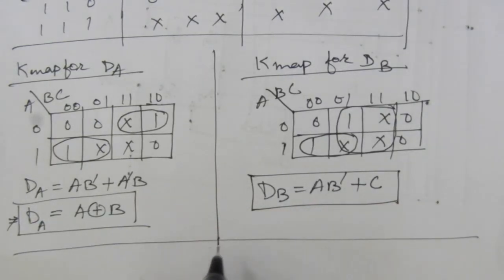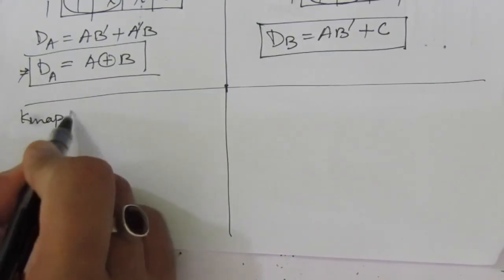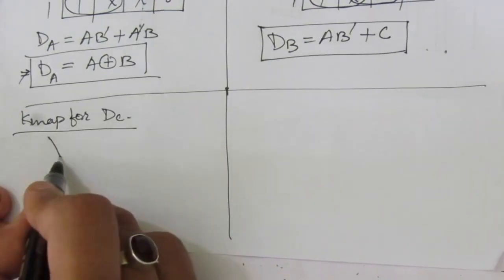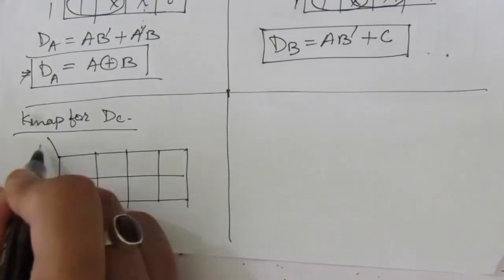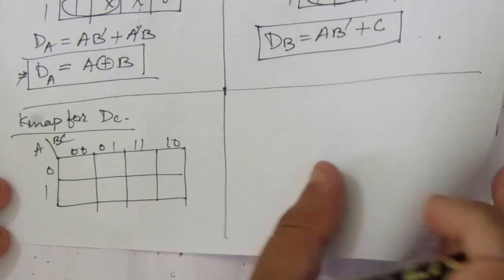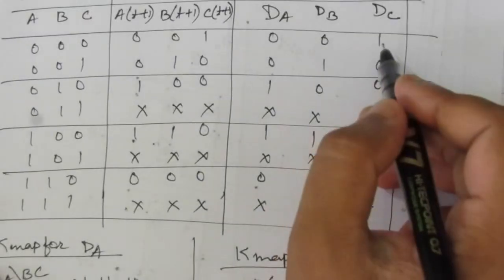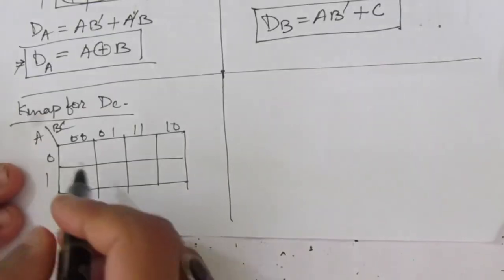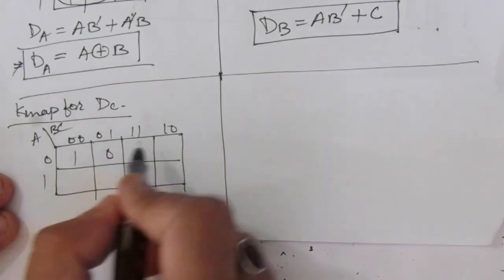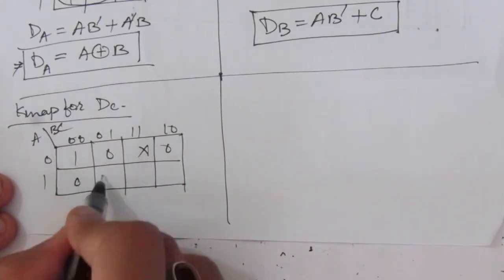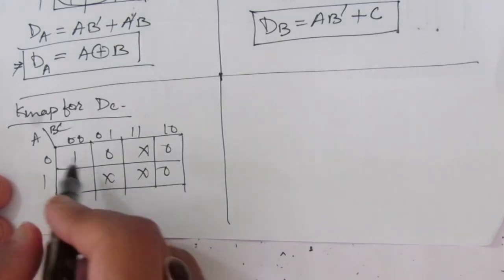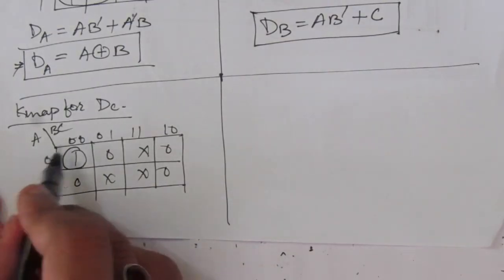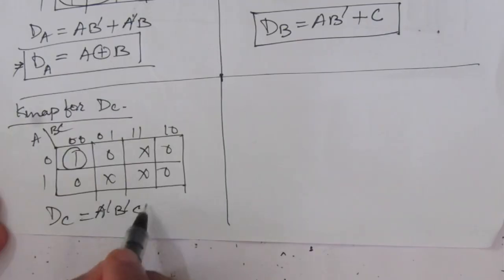Now let us find out the K-map for DC. Here also we have a 3-variable map. Placing the DC values: 1, 0, 0, don't care, 0, don't care, 0, don't care on one side, and similarly for the other side. We cannot combine further, so this will be one term. DC = Ā·B̄·C̄.